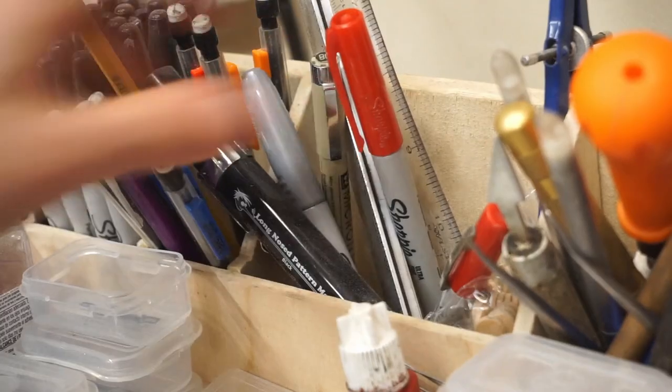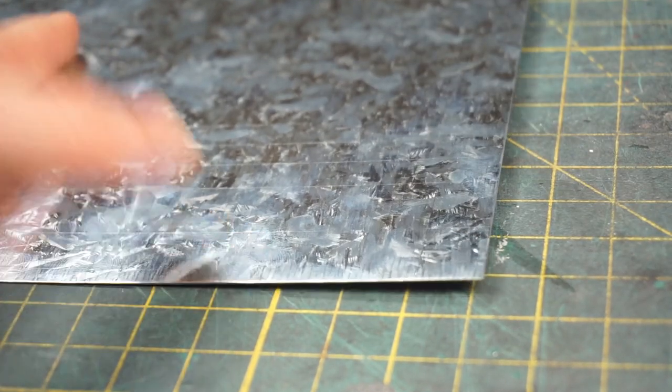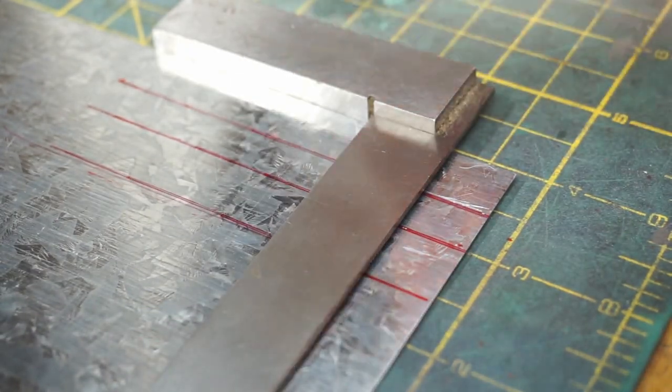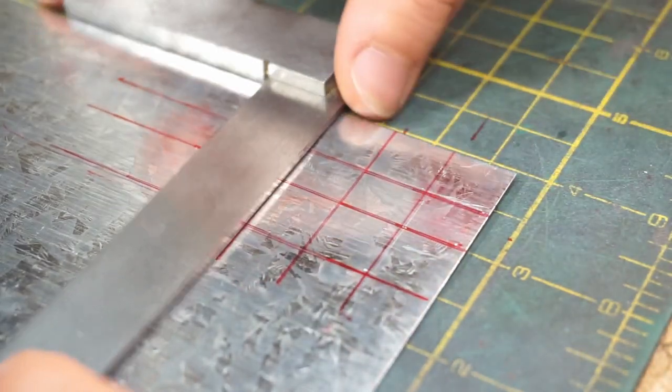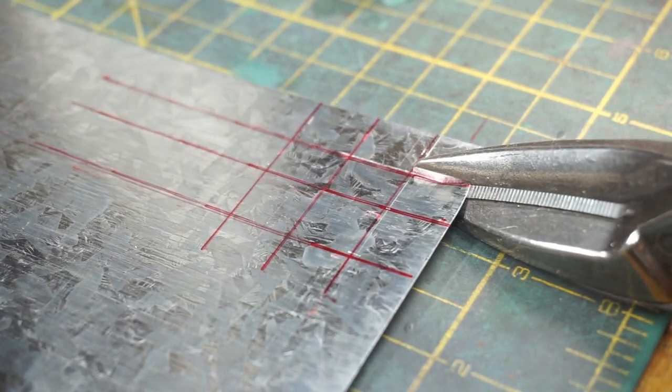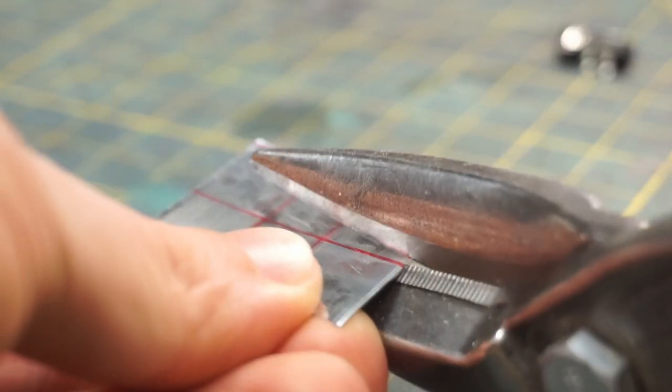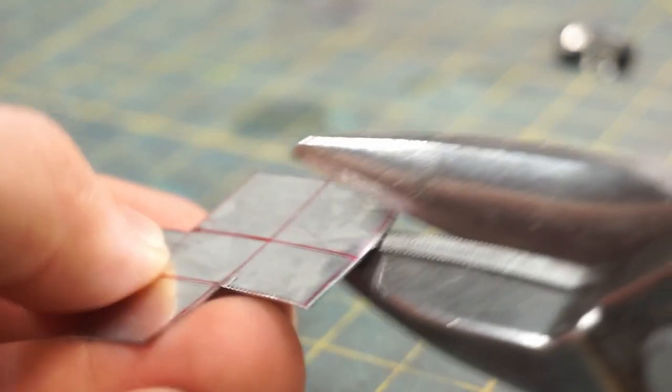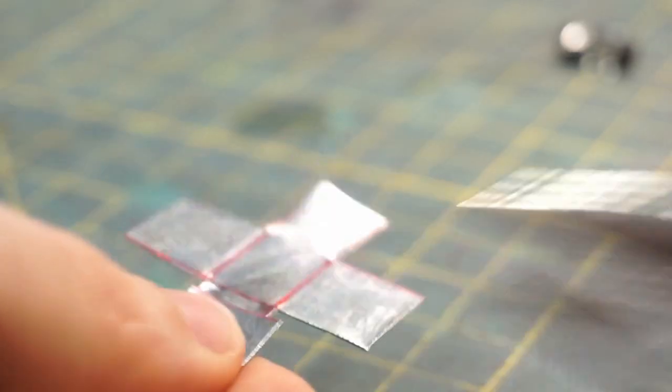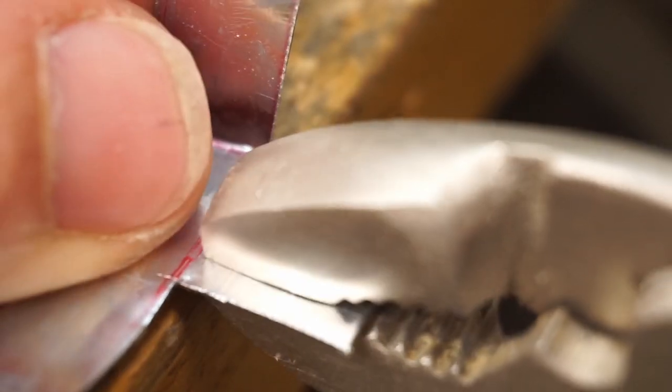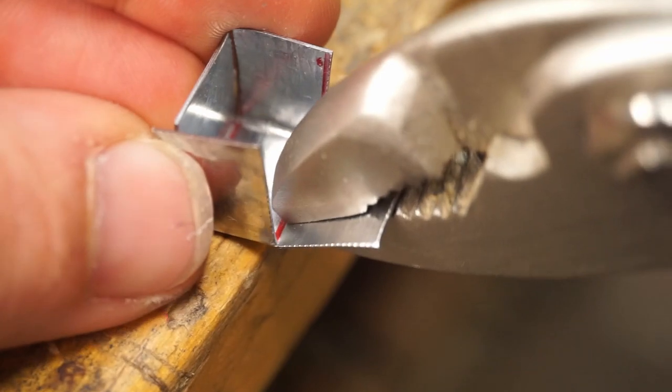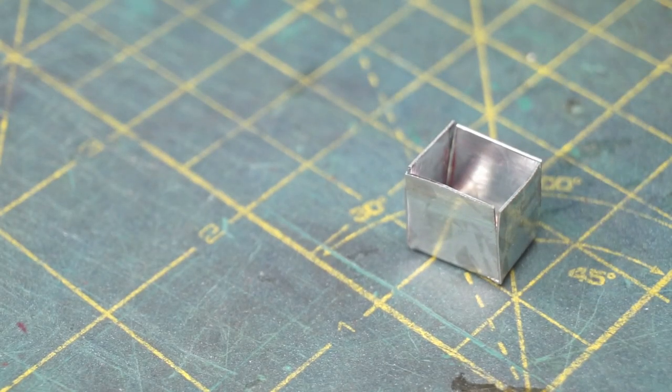Each box will be made from sheet metal. I'll mark out all the dimensions using my calipers. And then cut each blank to size. To form the rough electrical box shape, I'll bend each blank to form a rectangular prism with one side missing.